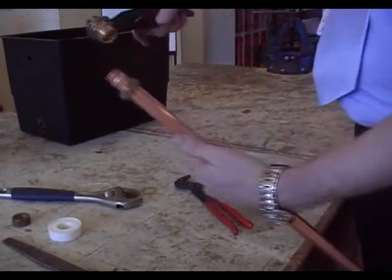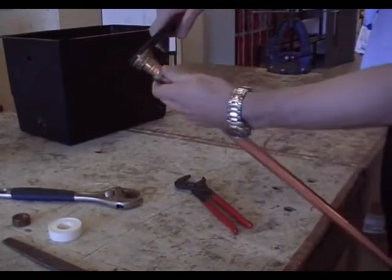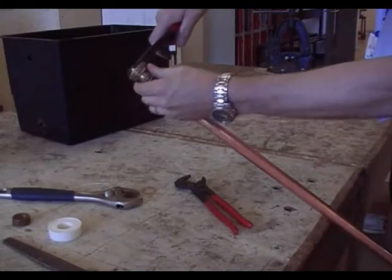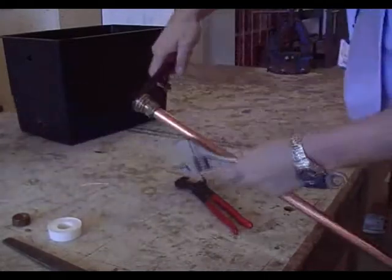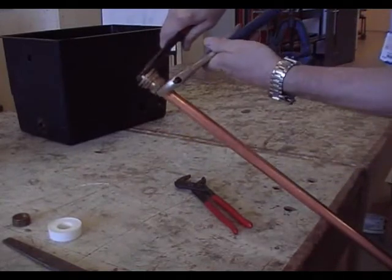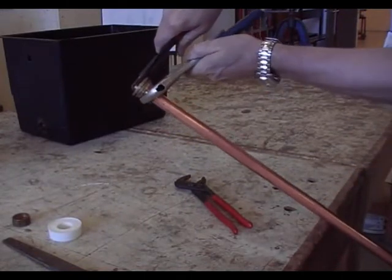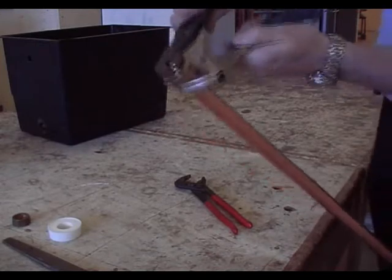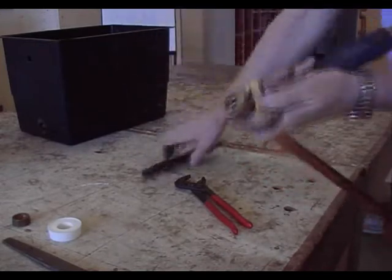Now when you've got it tightened in, we pretend that's tightened on the tank, when you're doing the nut and olive up, you still need one spanner on the inside to hold against, because otherwise when you tighten the nut up on the nut and olive, like I'm doing now, it will unscrew through the connector, and you'll have a leak.